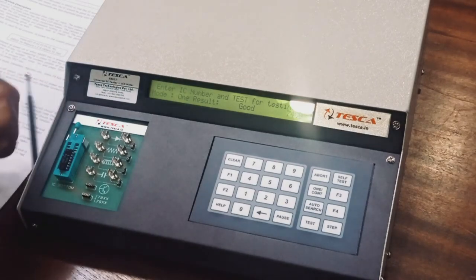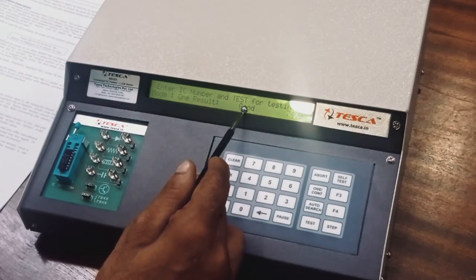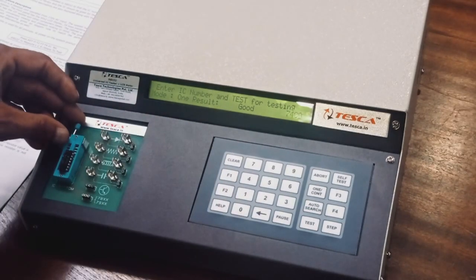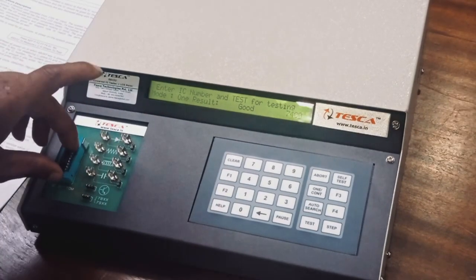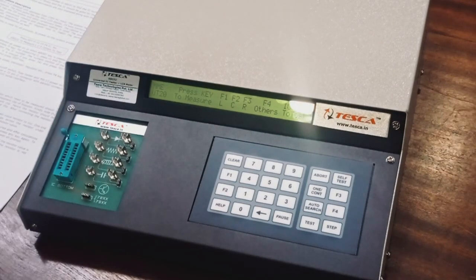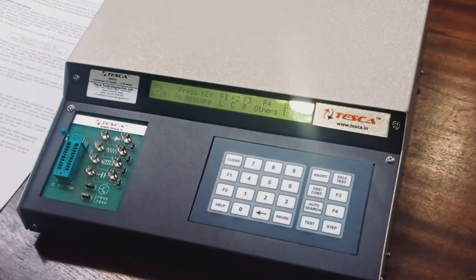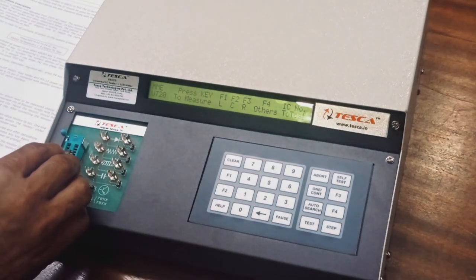Now it is showing our result. As per testing, it is found good. Now we remove this. Now we are going to test different IC. This is 74LS163. We have to put this IC there.